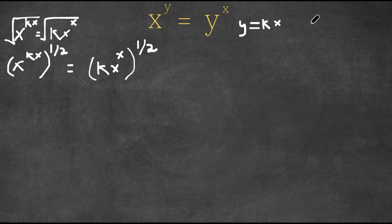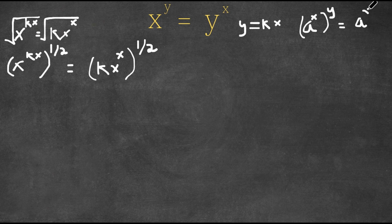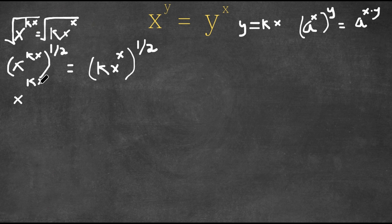If we have something like a to the power of x to the power of y, this is the same thing as a to the power of x times y. So we have x to the power of kx times one half, which is x to the power of kx over two. And on the right side, kx to the power of x times one half, which is x over two.